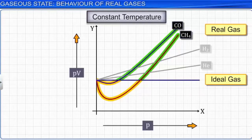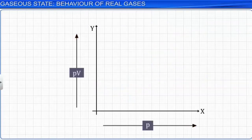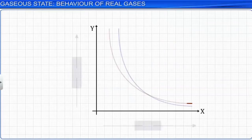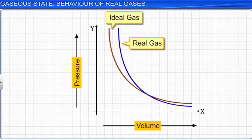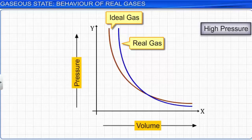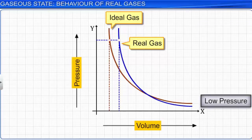Let us observe the nature of the graph obtained for a real gas in a pressure versus volume plot. It is clear from the graph that at very high pressure, the volume occupied by a real gas is more than that occupied by an ideal gas, and at very low pressure the volumes occupied by both a real and an ideal gas are almost the same. Hence, at high pressure these gases significantly deviate from ideal gas behavior.